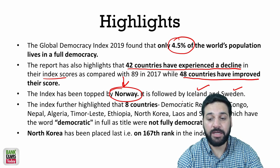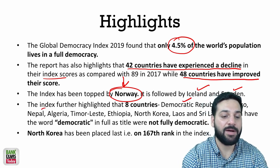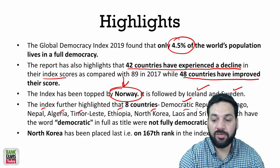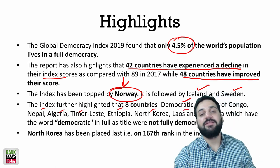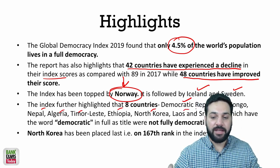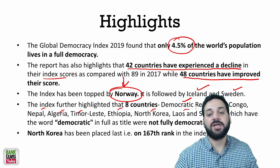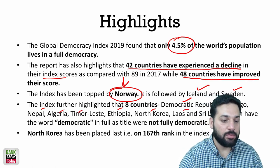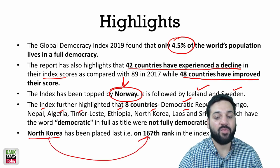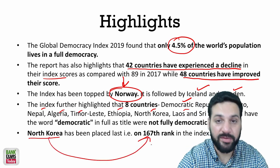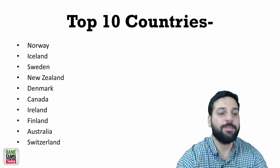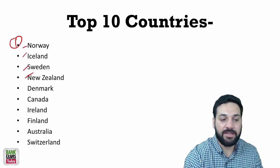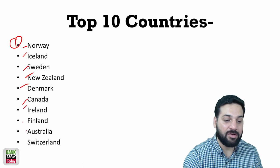Eight countries have the word 'democratic' in their name but are not titled as fully democratic — Democratic Republic of Congo, Nepal, Algeria, Timor, Ethiopia, North Korea, Laos, and Sri Lanka. North Korea has been placed at 167th rank, the lowest. The top countries are: Norway, Iceland, Sweden, New Zealand, Denmark, Canada, Ireland, Finland, Australia, and Switzerland.